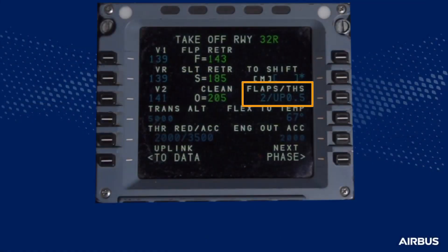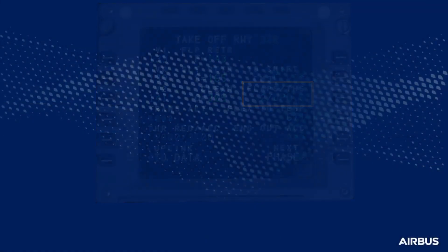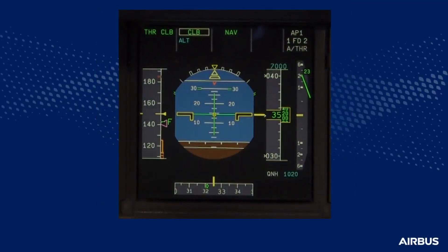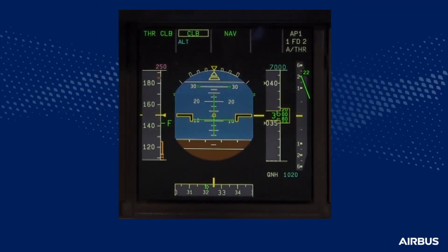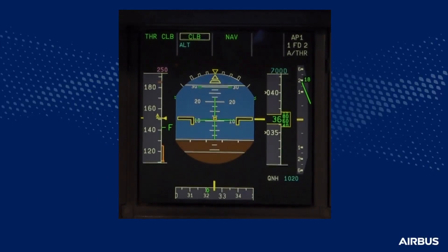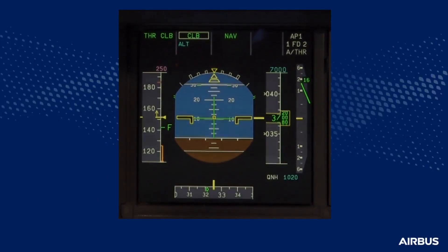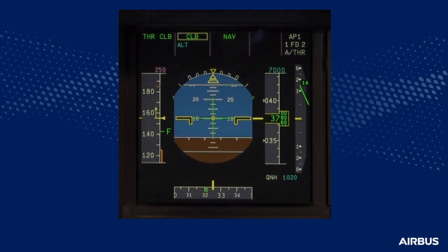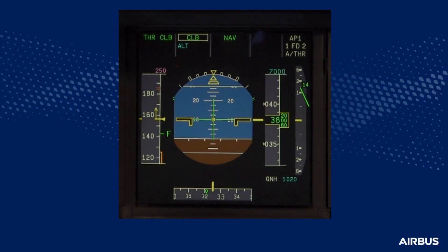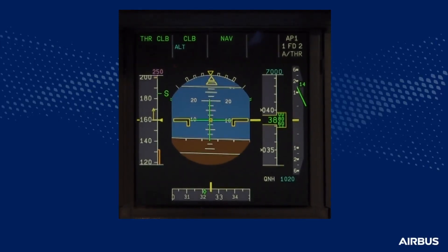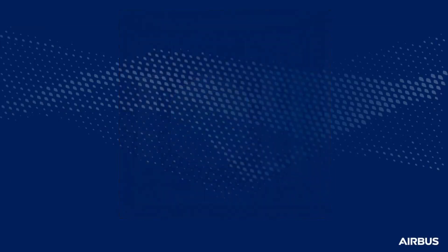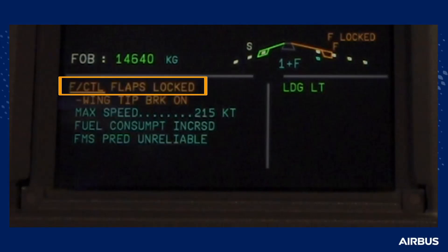Imagine a take-off in Config-2. When the aircraft goes above the acceleration altitude and the speed increases above F-speed, the pilot flying will request the pilot monitoring to select flaps 1. When the pilot monitoring selects flap 1, the crew receives a flaps locked ECAM alert.